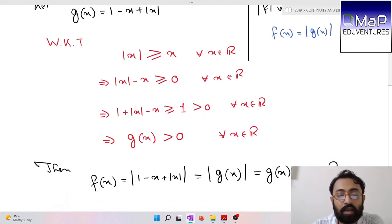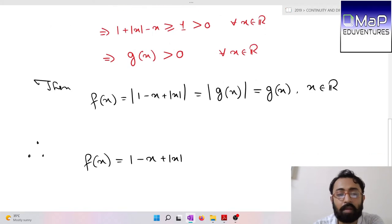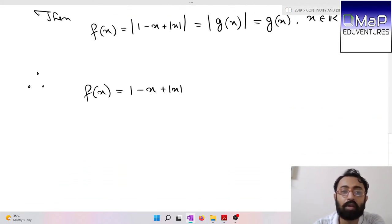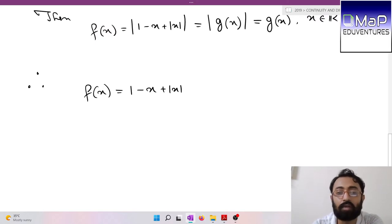Therefore f(x) is actually 1 - x + |x|. Let me remind you what we discussed: the interior part is continuous, and we can use the property that when the function inside is positive, we can break it algebraically.